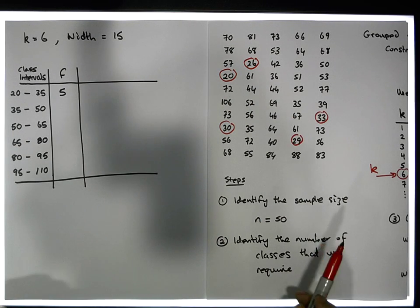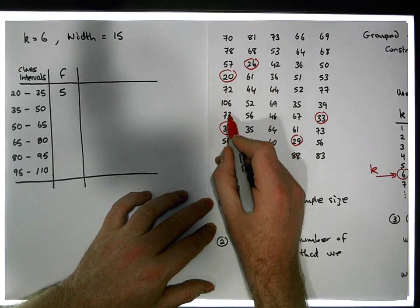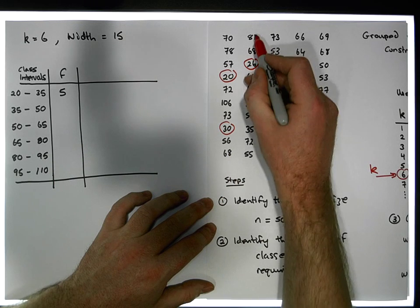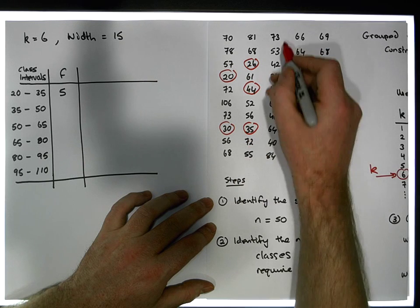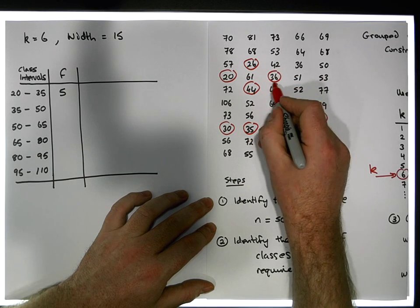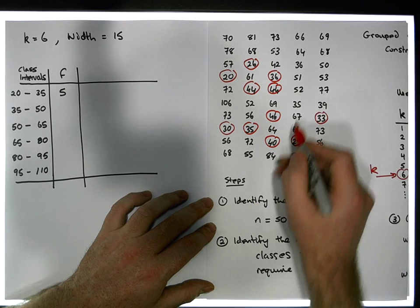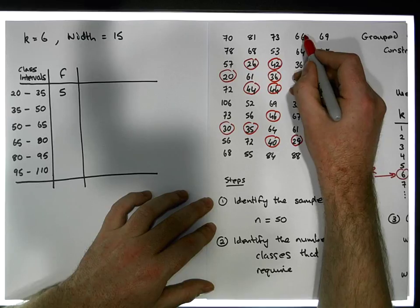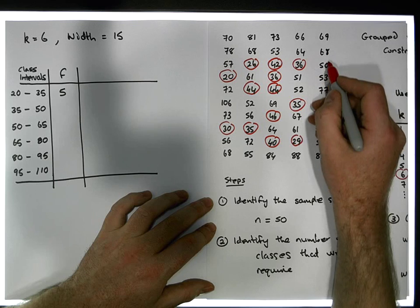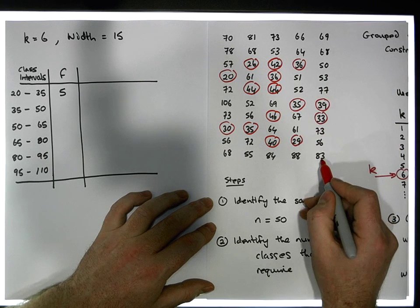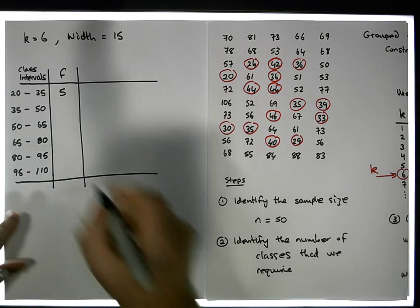Of the remaining values that haven't been crossed off, how many are less than 50? None of these here, then there's one, two, three, four, five, six, seven, eight, nine, ten — there are 10 values that are less than 50, so the frequency for this interval is 10.